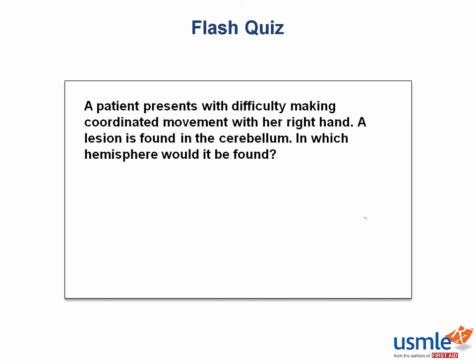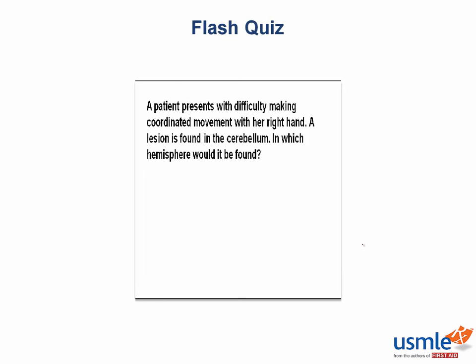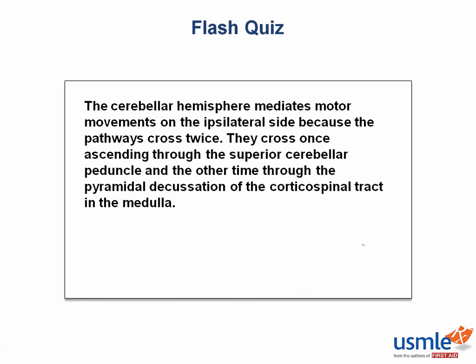Time for a flash quiz: a patient presents with difficulty making coordinated movement with her right hand, and a lesion is found in the cerebellum — in which hemisphere would it be found? Remember that the cerebellar hemisphere mediates motor movements on the ipsilateral side because the pathways cross twice: once through the superior cerebellar peduncle, and again through the pyramidal decussation, where the corticospinal tract also decussates in the medulla.